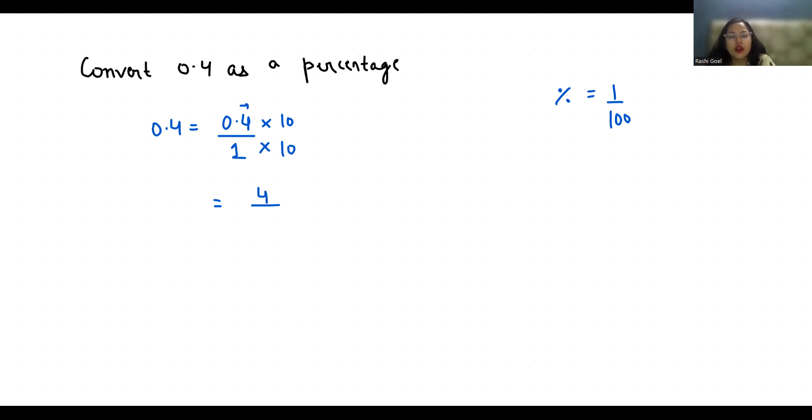Now we have to convert into percentage and we know that in percentage the denominator is 100. So to convert 10 into 100 I have to multiply by 10. Now if I make any change in denominator I have to make a similar change in numerator.